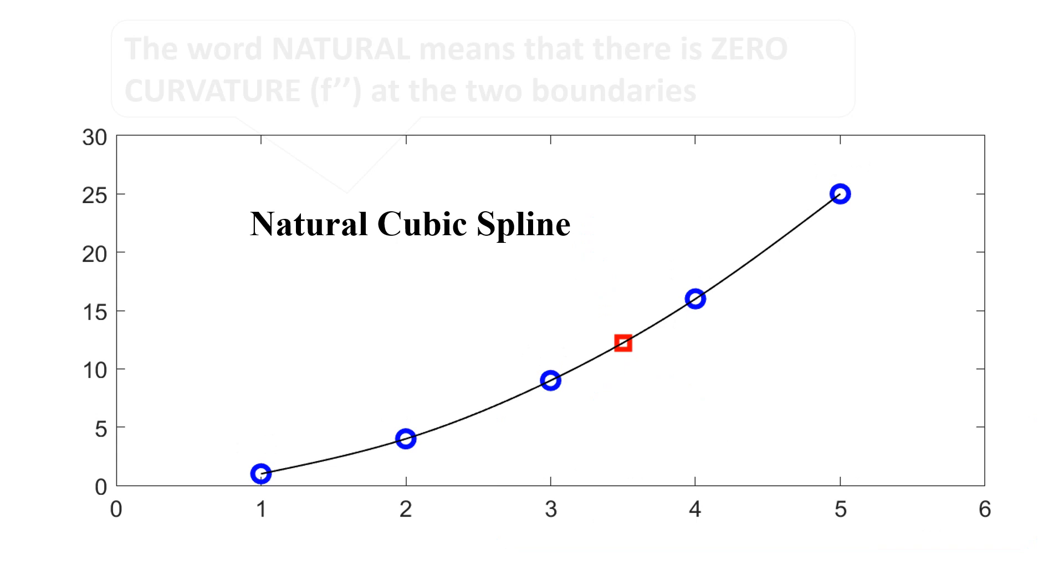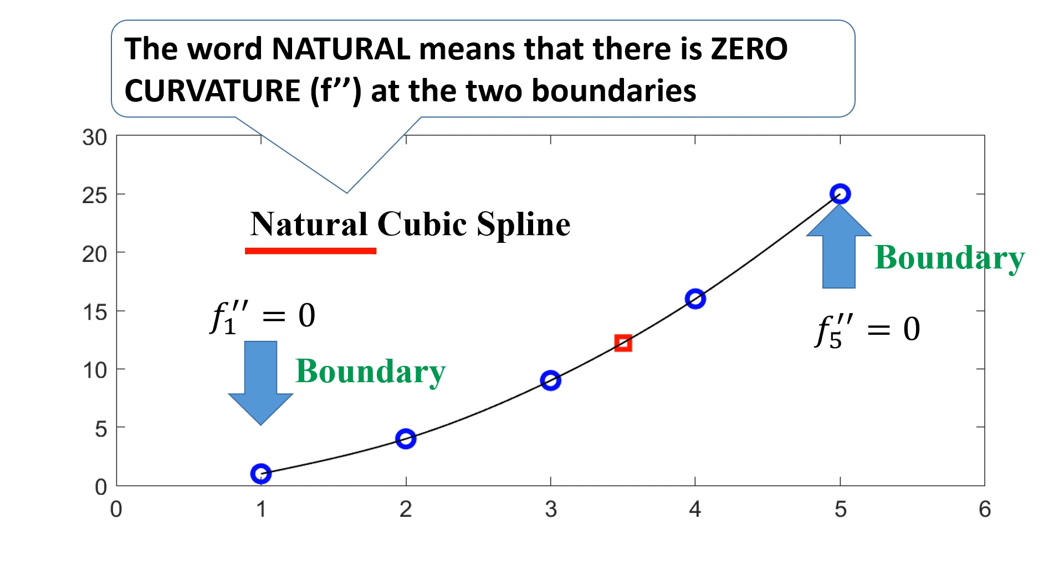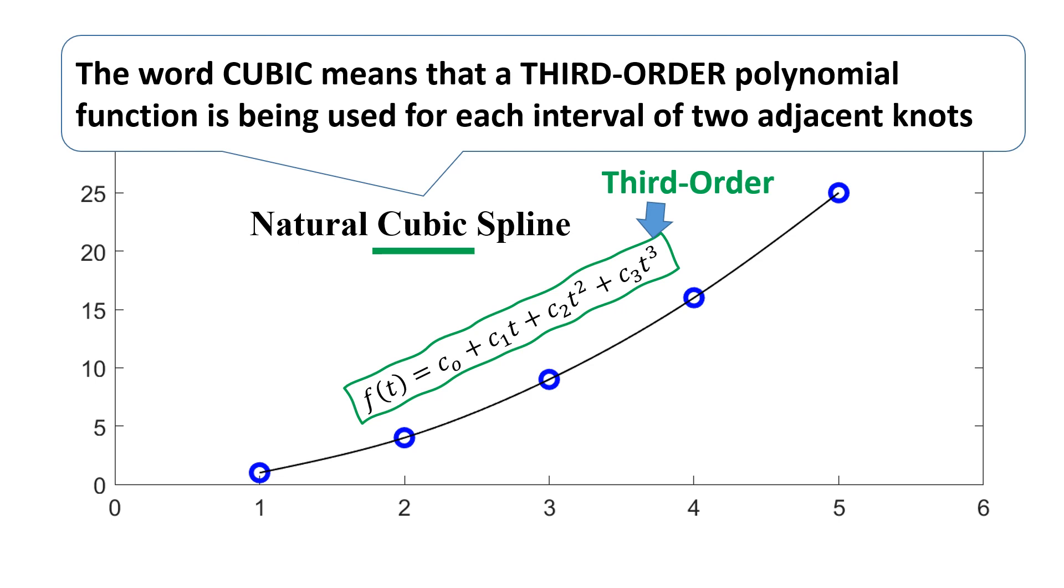The word natural means that there is zero curvature at the two boundaries. The word cubic means that a third order polynomial function is being used for each interval of two adjacent knots.